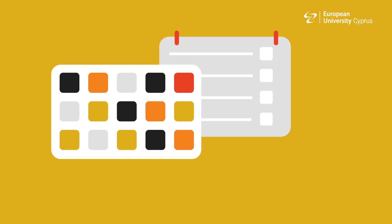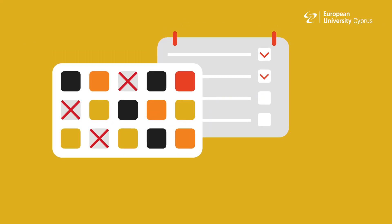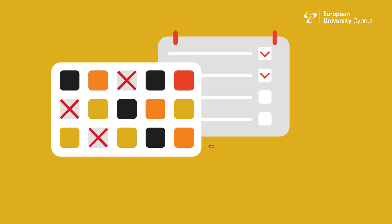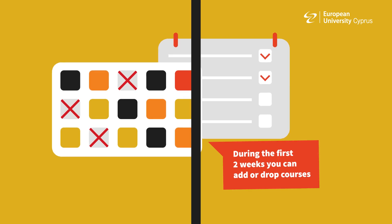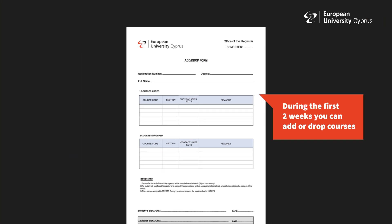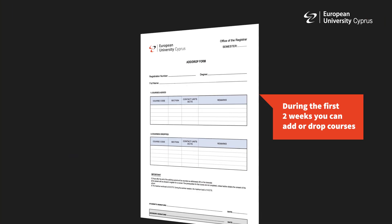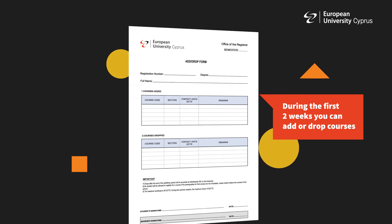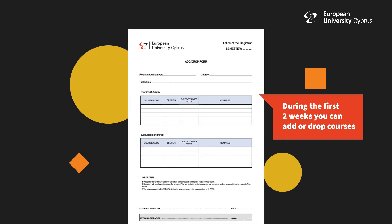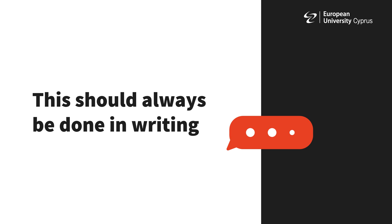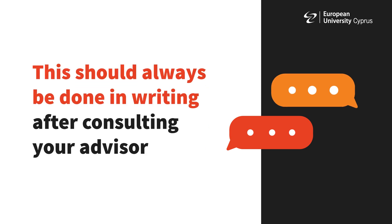What happens if your course schedule is not convenient for you? During the first two weeks of the semester you have the right to make a change in your timetable — you can add or drop a course without consequences, if your curriculum allows it. This should always be done in writing after consulting your academic advisor.